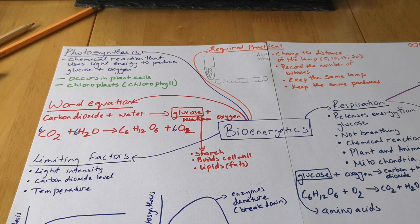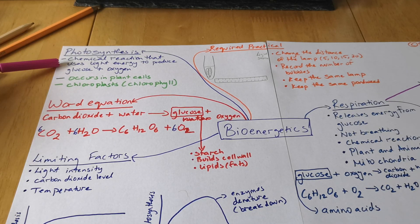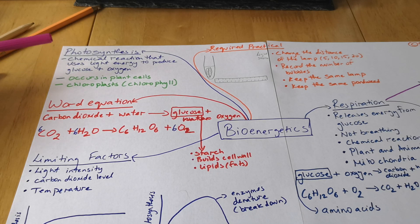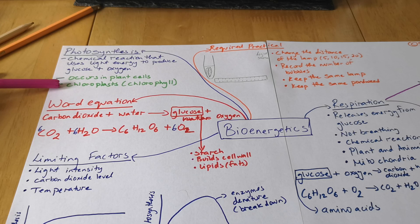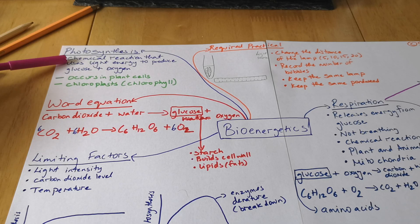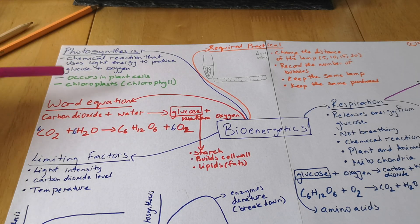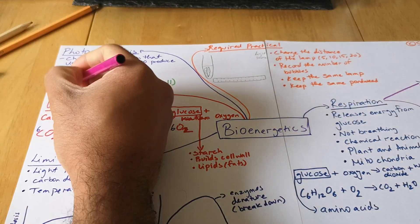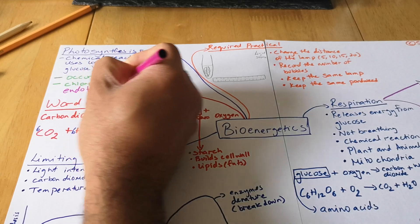So photosynthesis, well it's a chemical reaction that uses light energy to produce glucose and oxygen. Where does it occur? It happens in plant cells, mainly in the chloroplast, the chlorophyll which is the green part. Because it's using light energy, so the sunlight, it is an endothermic reaction.